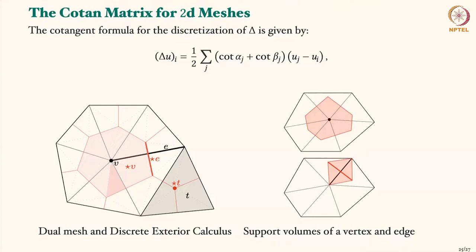The cotangent formula is not really very new. It comes from a discretization I won't go into, but I've put references and illustrations here. There is a completely geometric discretization of partial differential equations called discrete exterior calculus. In discrete exterior calculus, one has this object — the primal mesh, the meshes that you have been working with — and one also has a Voronoi dual region of these meshes. This illustration shows the various dual elements marked by the star operation of the primal elements.